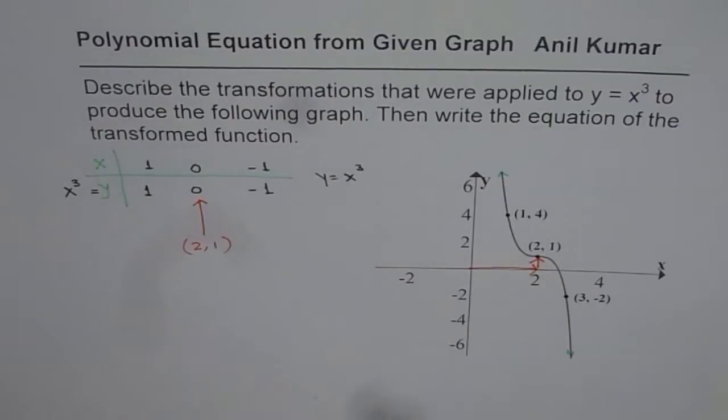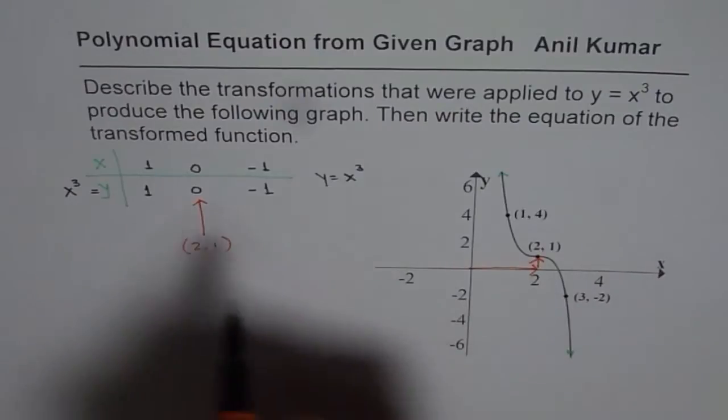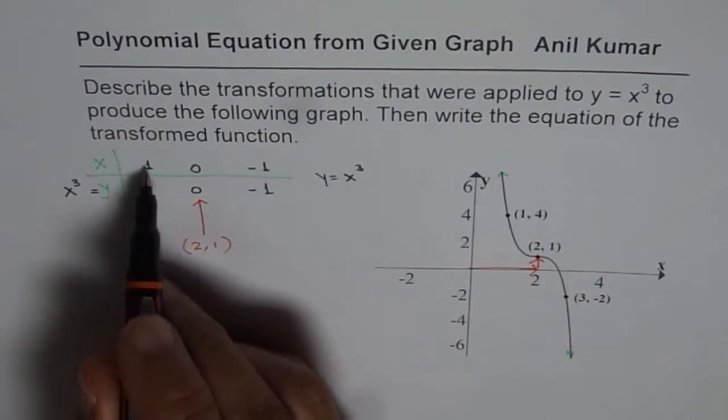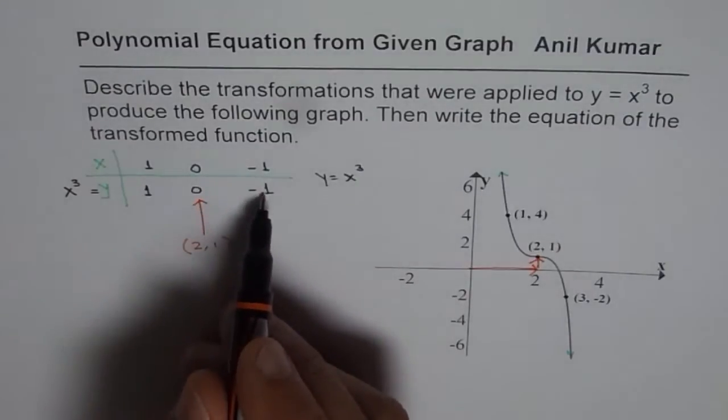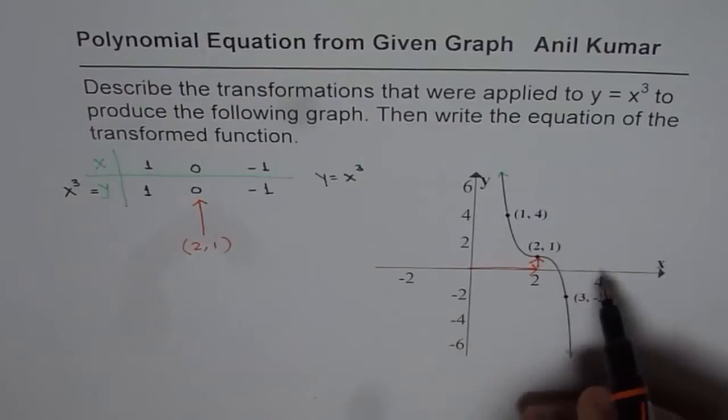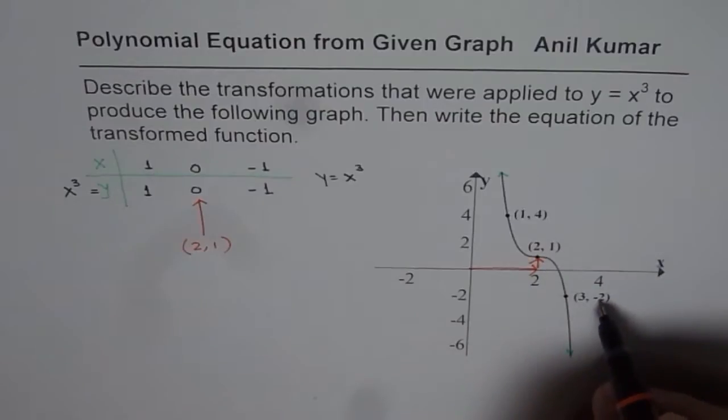Second thing which you notice is that the point next to that, which is one unit away in the original function, should have been one unit up or down. So if I take a unit which is 1 to the right, what we notice is that it has moved from 1 to -2. That means it has moved three units down.